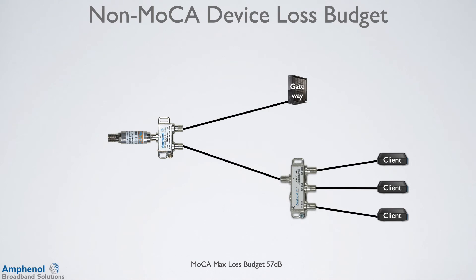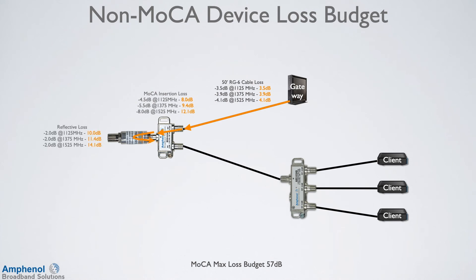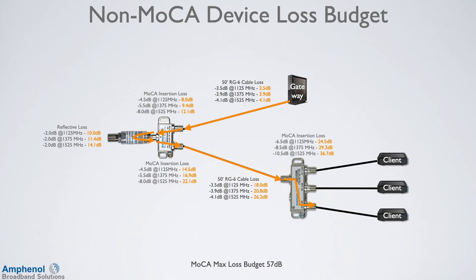In this example, we have a two-way splitter with a point-of-entry filter. One leg feeds the gateway, and the other leg feeds the three-way, which has three clients. The path we'll calculate is from the gateway to the bottom client. From the gateway, we go through 50 feet of RG6 cable, take the insertion loss path from the output to the input of the two-way, the signal reflects off the point-of-entry filter, goes through the other insertion loss path, through 50 feet of cable, takes the insertion loss path of the three-way, and then through another 50 feet of cable to the client. As long as we know the path that MOCA takes between the two devices of interest, we just add up the losses of each component in the path for our total loss budget.